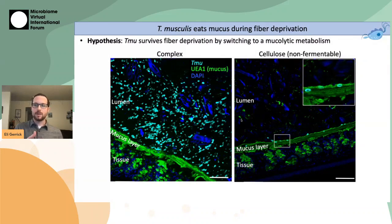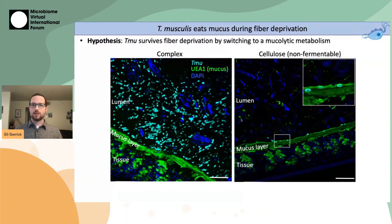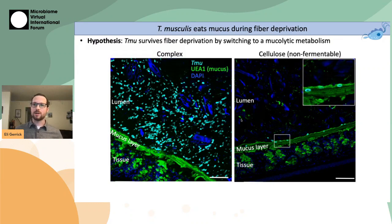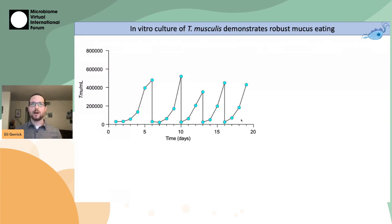In order to prove that T. musculus can grow on mucus glycans, the best approach would be to culture the protist in vitro with mucus. But as I mentioned, these protists weren't culturable — though this is something I've been working on throughout my entire postdoc, and my postdoctoral advisor had been working on it during his postdoc as well. There was a combined eight years of work in our lab trying to culture these protists. Around this time, I made a breakthrough in figuring out how to culture T. musculus in an axenic in vitro culture, and have now been able to grow it continuously for six months.